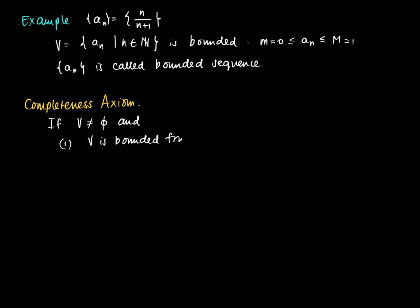Suppose V is bounded from above, then the completeness axiom for the real numbers states that there must be a smallest upper bound.